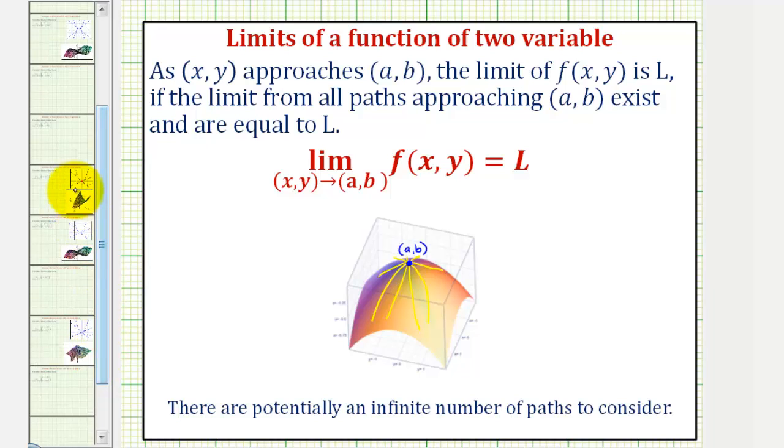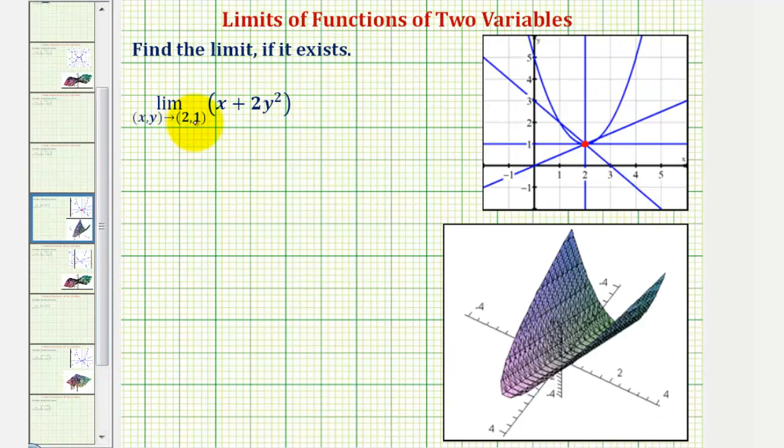So going back to our example, notice how our function f(x, y) = x + 2y² is continuous over all real numbers (x, y) and therefore we can find this limit performing direct substitution.